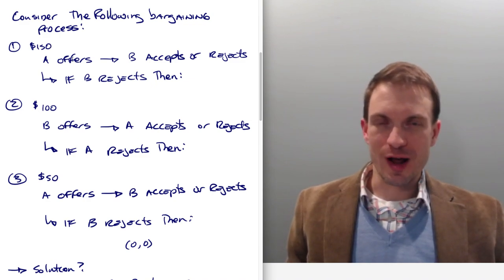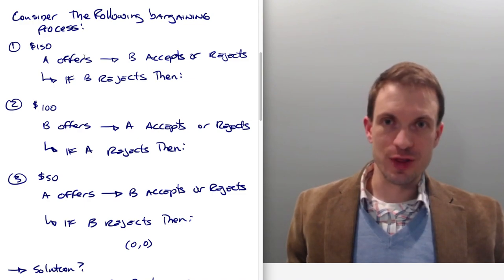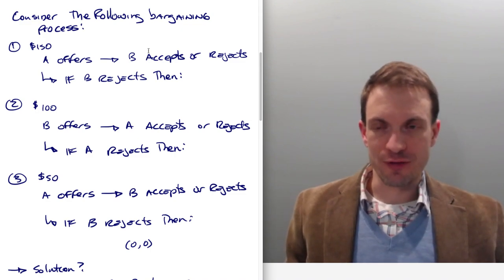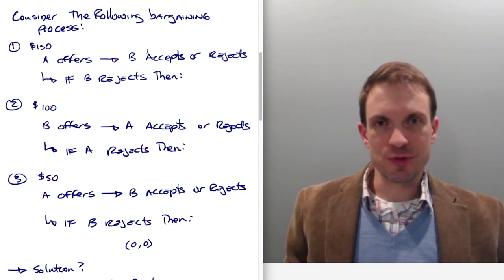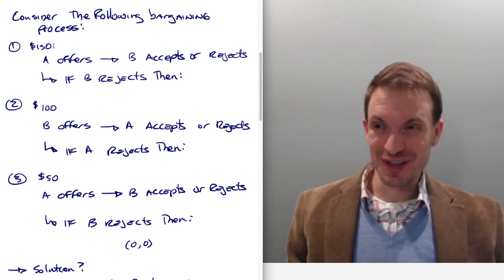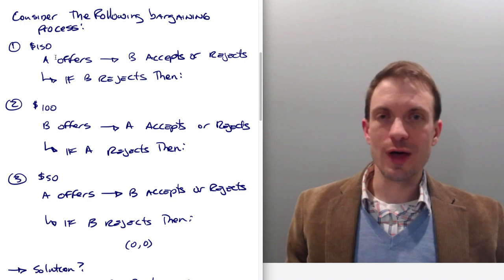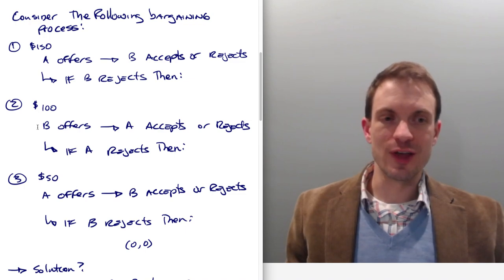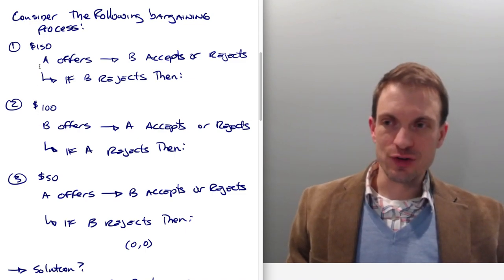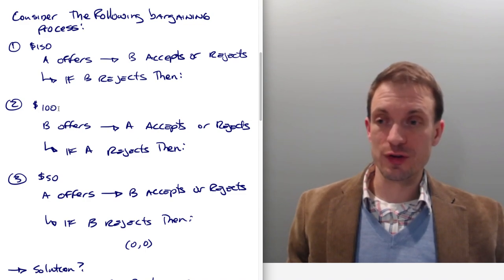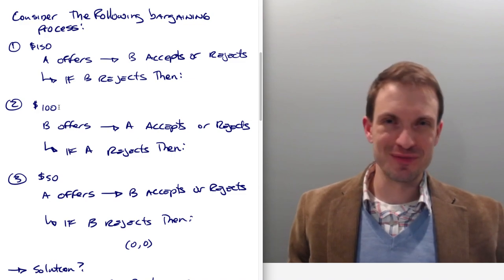We've got this process where one person, one side, let's call them A, makes an offer and then the other side, call them B, either accepts or rejects that offer. If B accepts the offer, then the surplus, the $150,000 or whatever it is, gets distributed according to A's offer. However, if B rejects, then we move on to round two where B is able to make a counteroffer. But there's a catch going from round one to round two, the surplus is going to shrink. It reduces by a third down to a hundred here. So now we only have a hundred dollars, a hundred thousand, a hundred million, whatever it is.